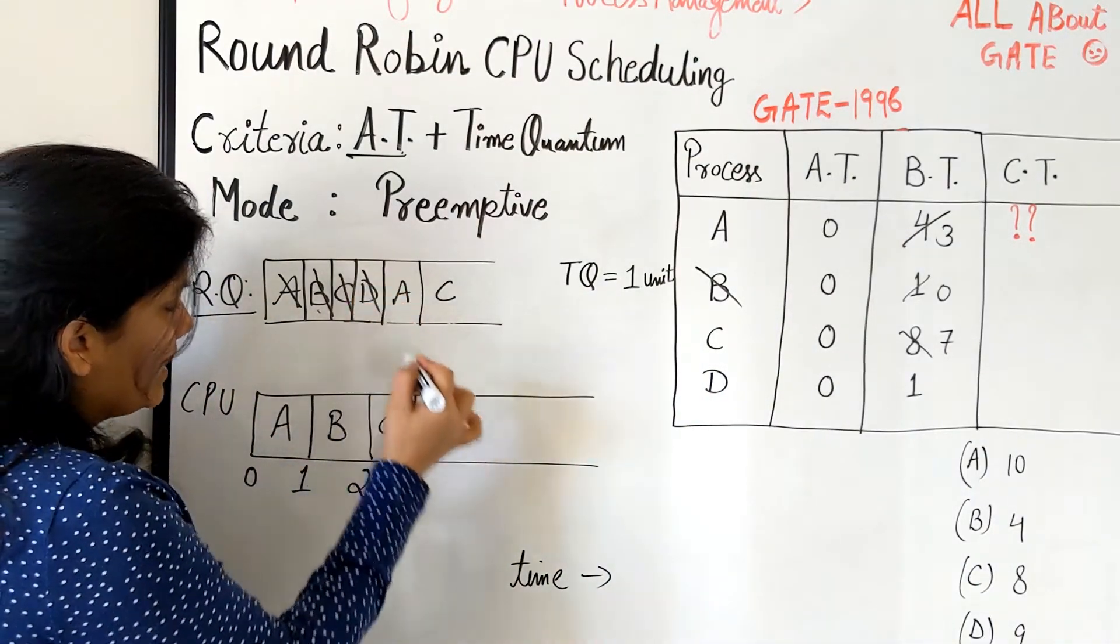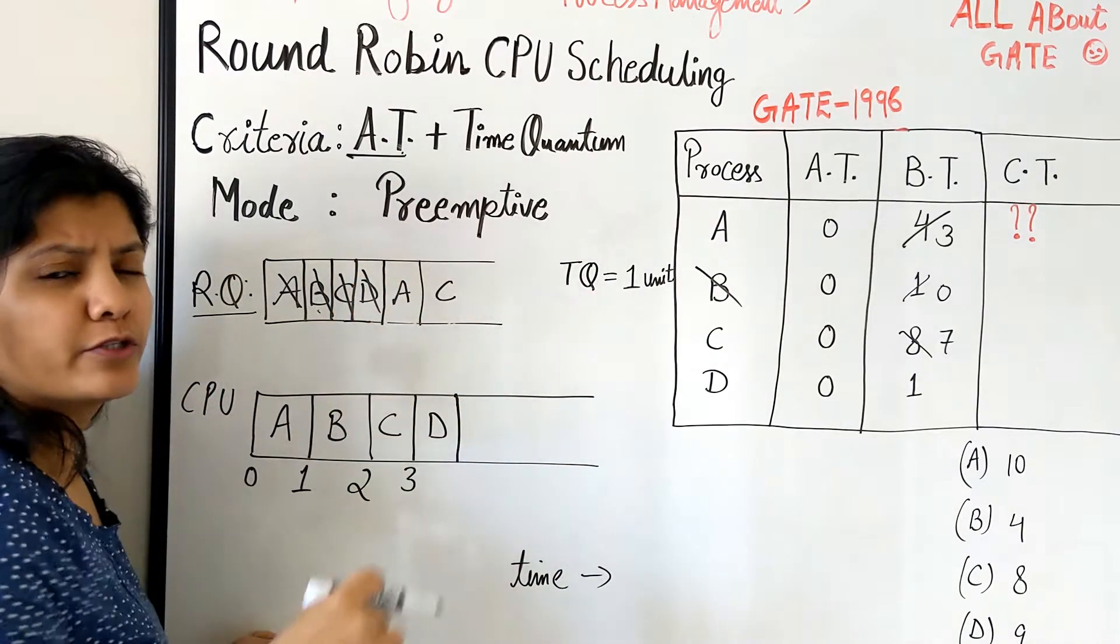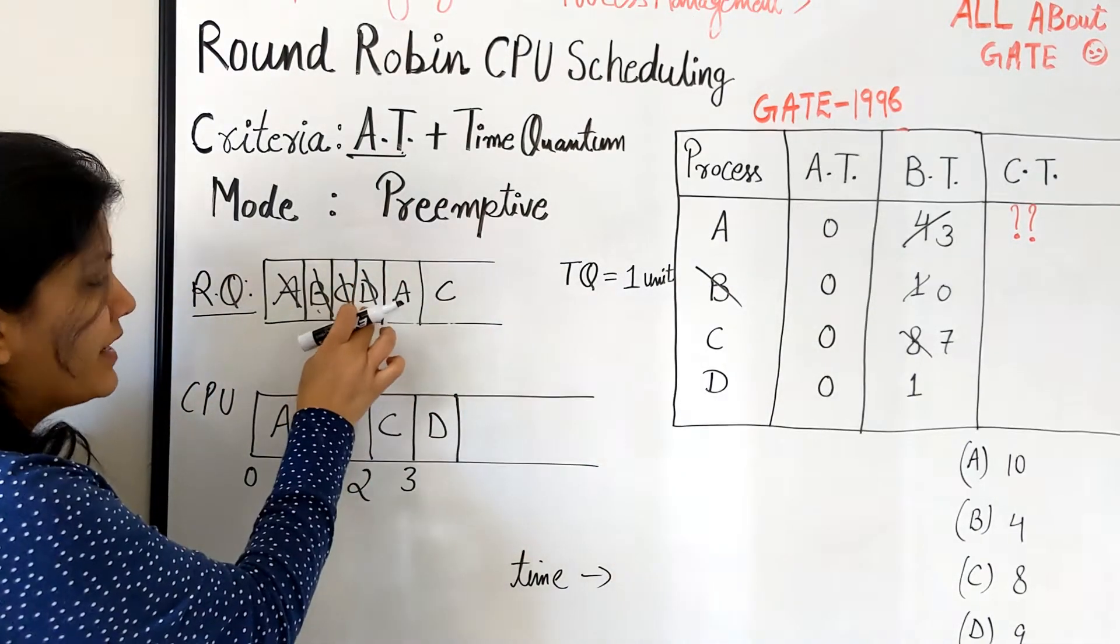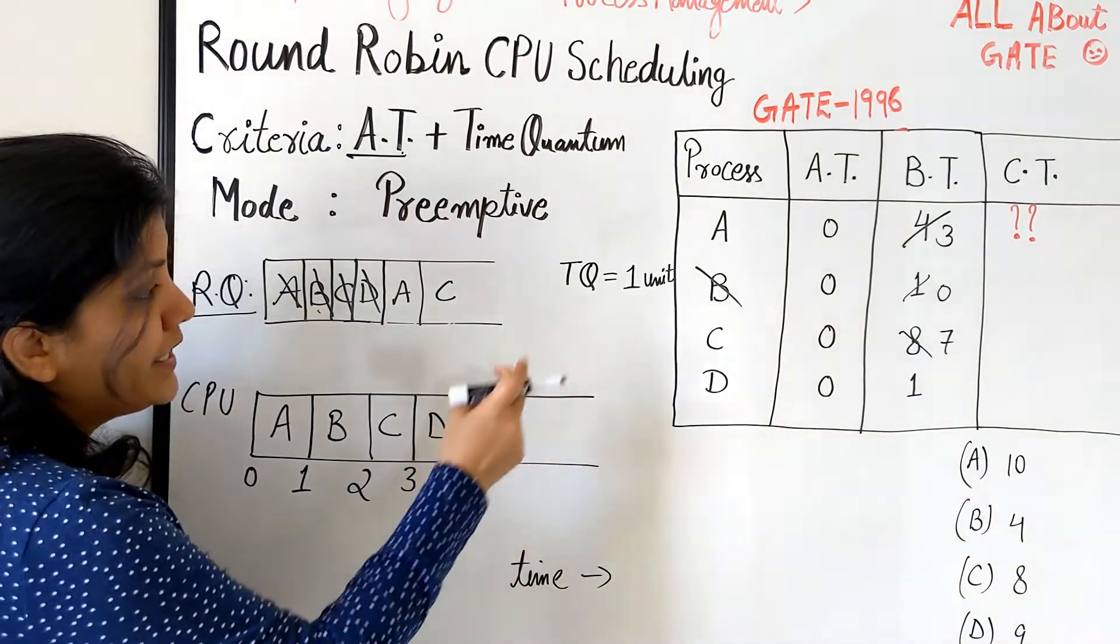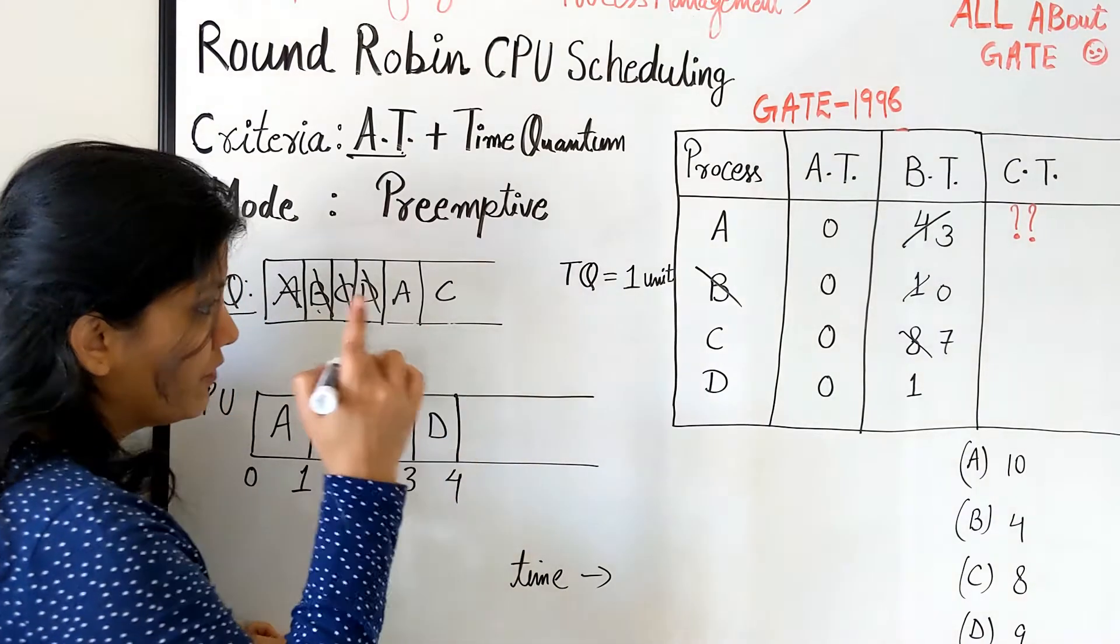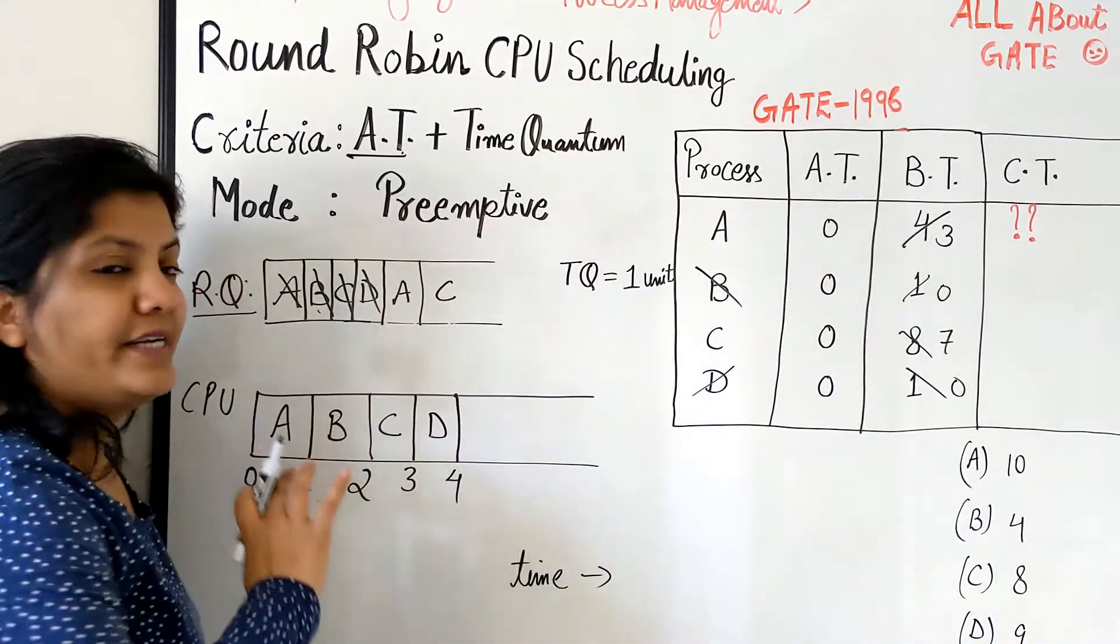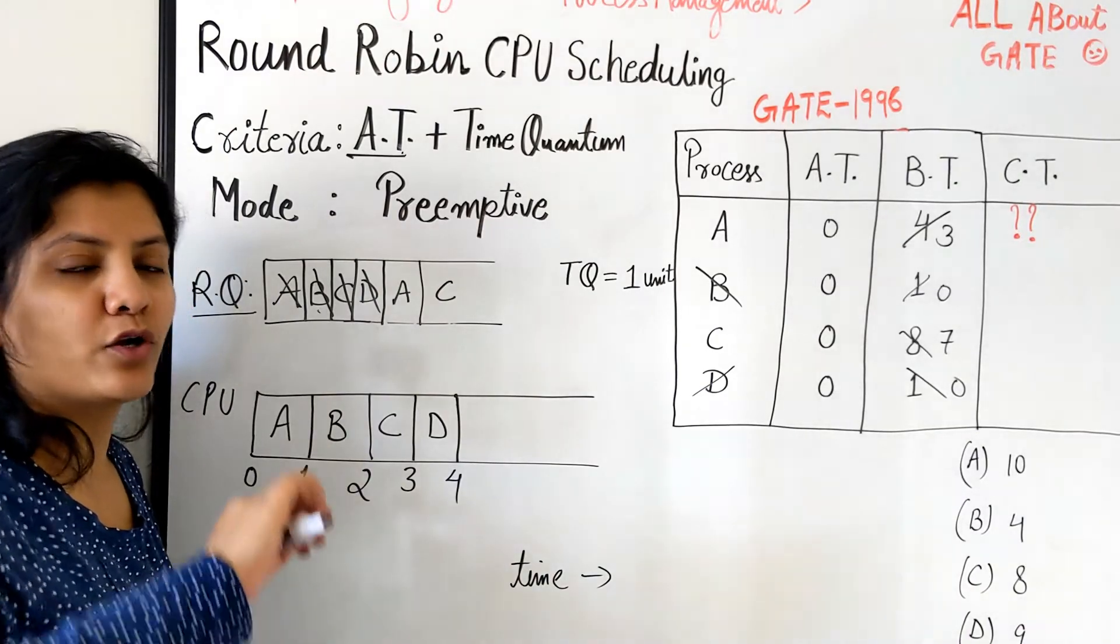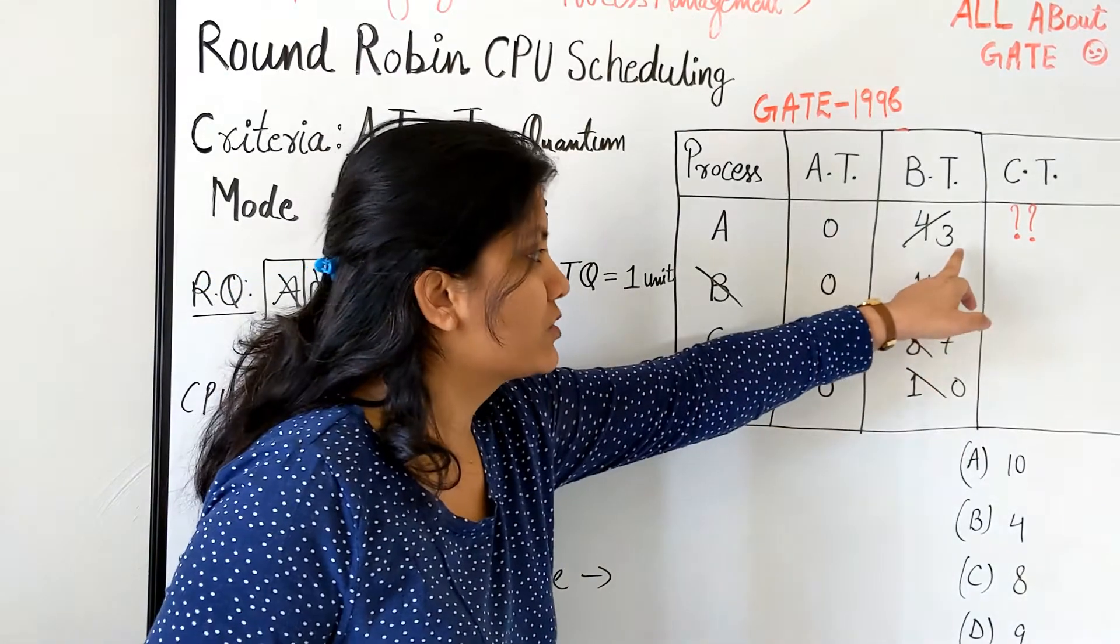Now D. Let's give a chance to D. And whichever process you are picking just make a cut to it so that you are clear that this part has been scheduled already. That's for the understanding. So D needs one burst again and we can give only one quantum so this also becomes 0 and this got finished. So D is ultimately finished just like B. It also got terminated.